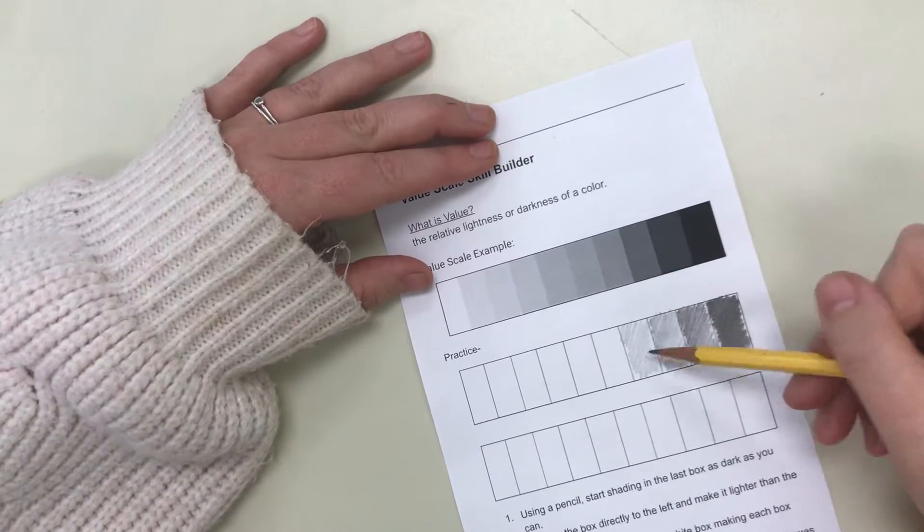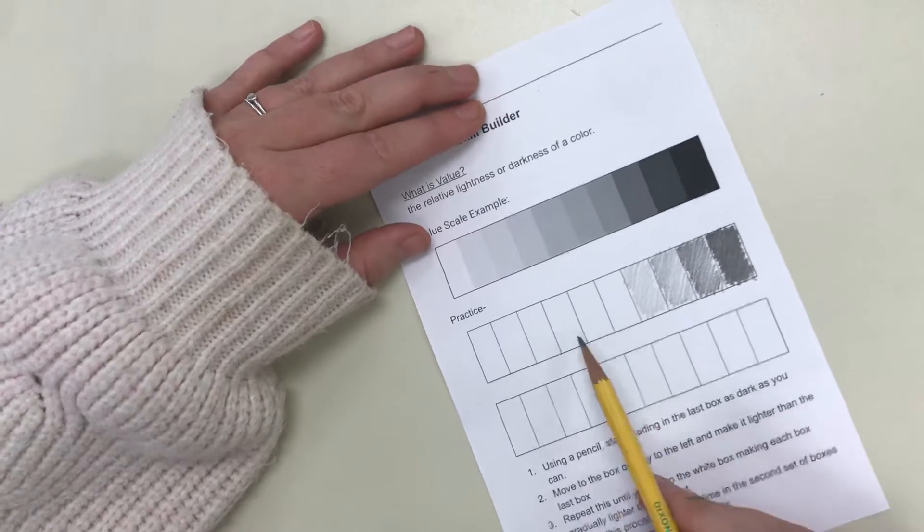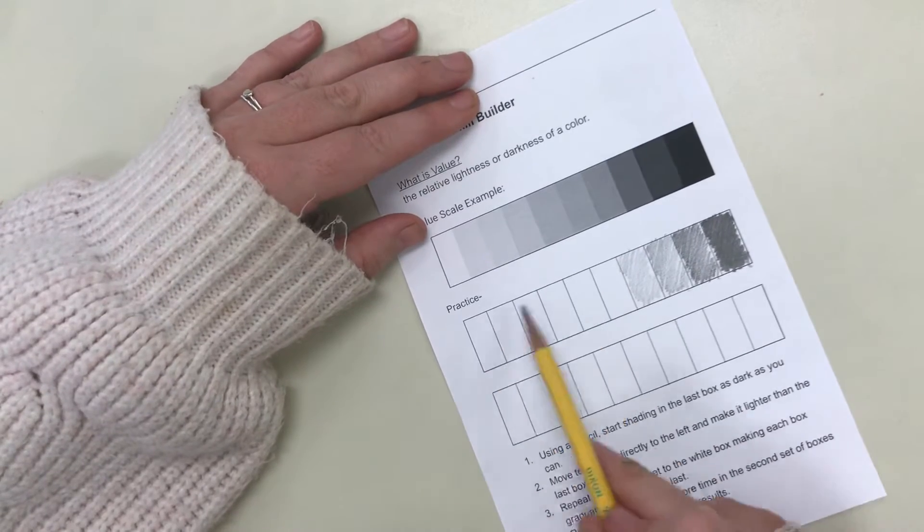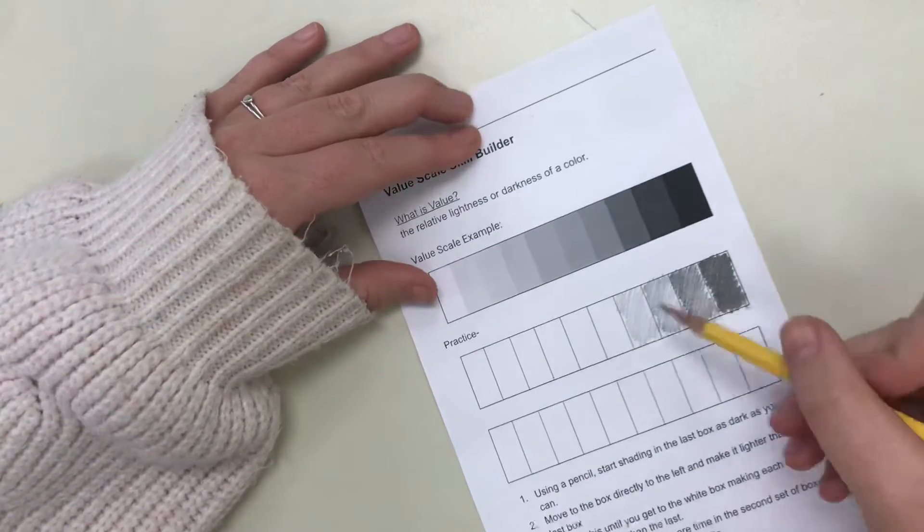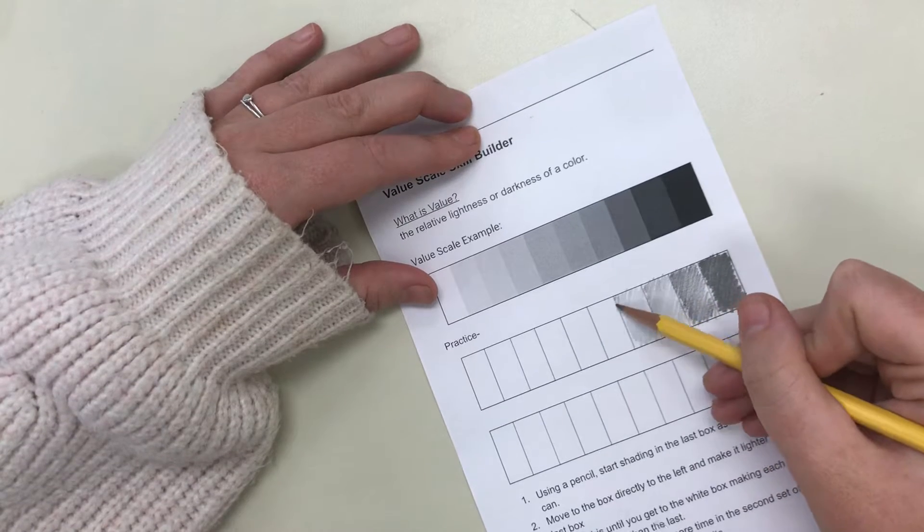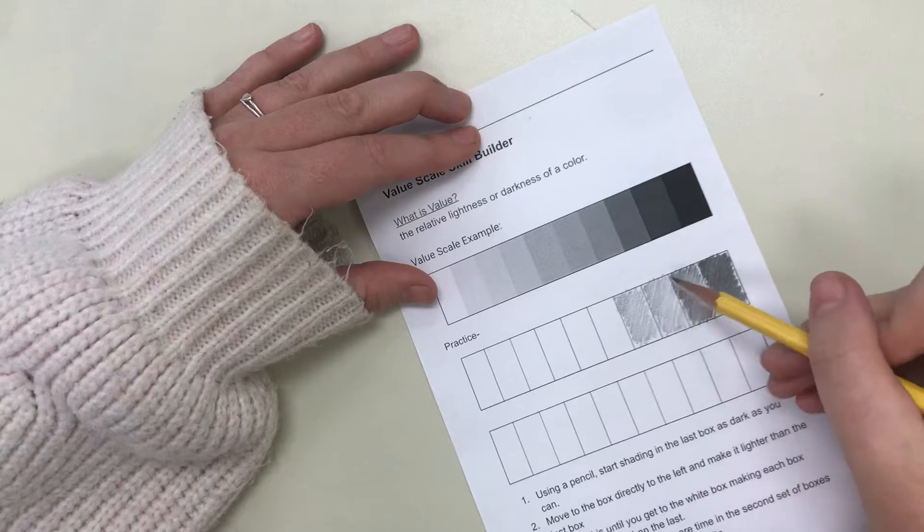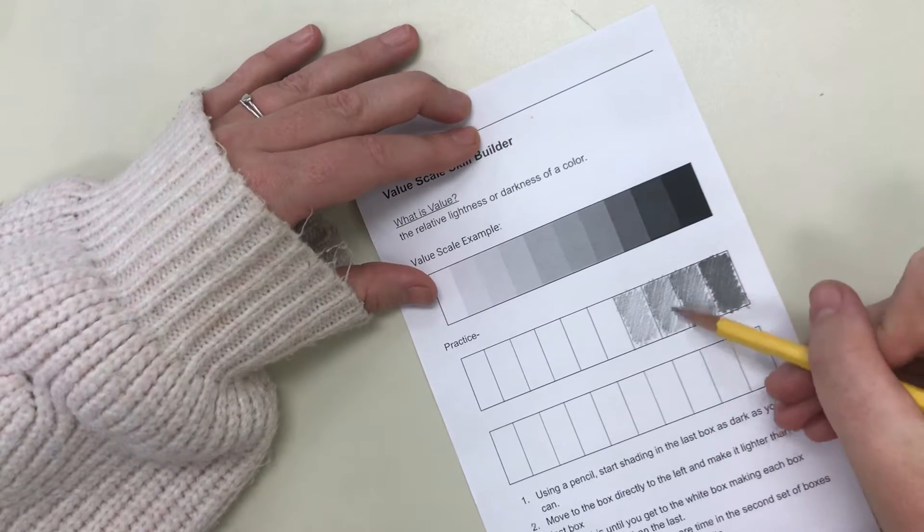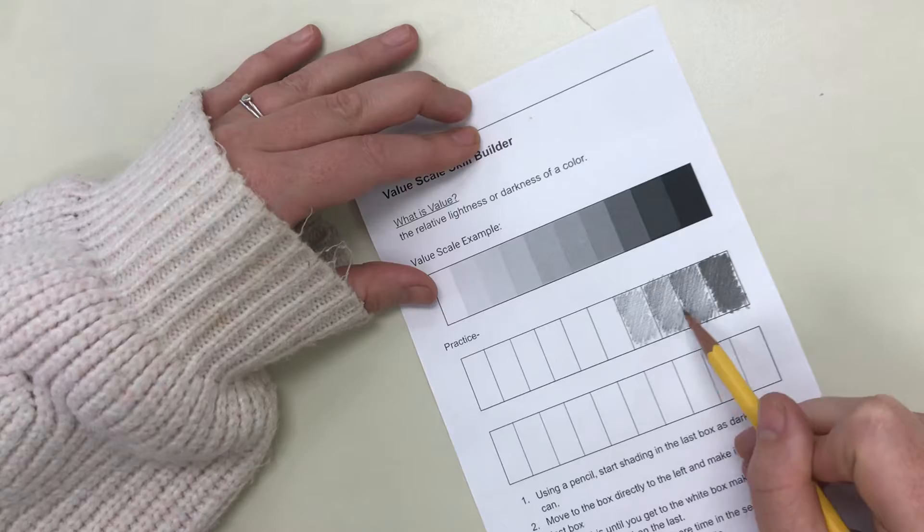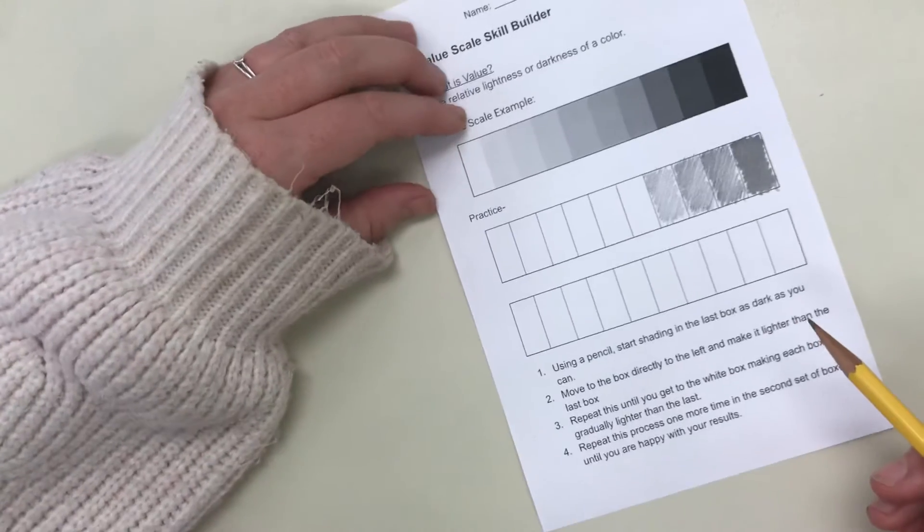I do see that I'm going a little too light already and I'm gonna run out of values and gonna have nowhere to go when I get to the far left side. So what I want to do is go back over and make this one just a tad darker and then make the one next to it a tad darker. And as long as they're still slightly different values from one to the other you are good.